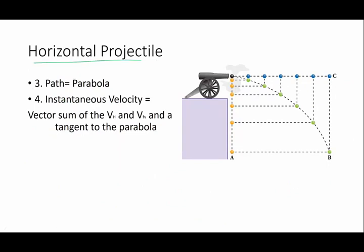Third thing about a horizontal projectile is the path. The path is parabolic. It is not a straight line, because you've got a squared equation going in this direction, and a linear equation going in that direction, and the combination of both of those motions, you get that curve, and that's called a parabola. If you want to know the velocity at any instant, it can be the vector sum of the horizontal and vertical velocity, or a tangent to that parabola.